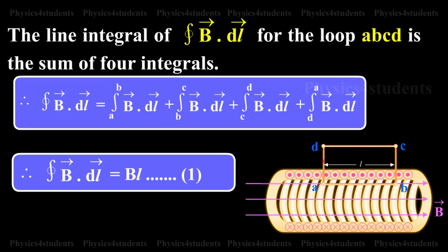Therefore, integral of closed surface vector B dot vector dl equals integral A to B vector B dot vector dl plus integral B to C vector B dot vector dl plus integral C to D vector B dot vector dl plus integral D to A vector B dot vector dl.